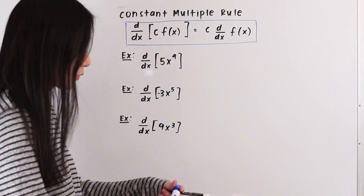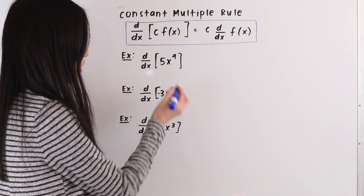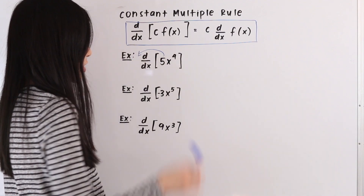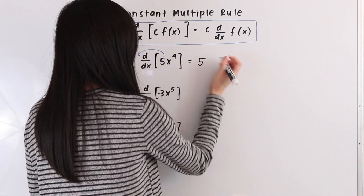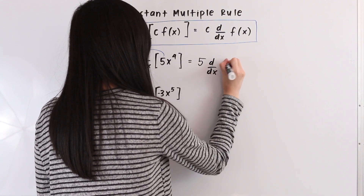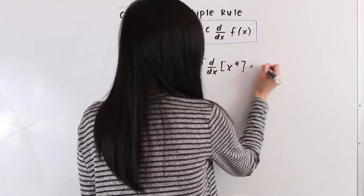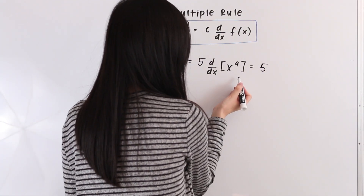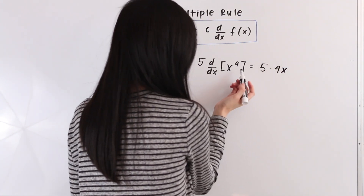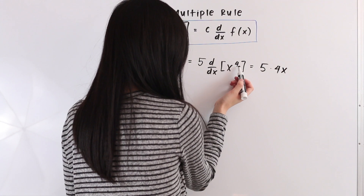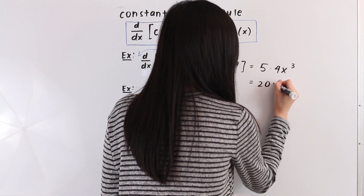In this first example we have the derivative with respect to x of 5x to the fourth power. As our first step, let's bring this constant outside of our derivative, giving us 5 times the derivative with respect to x of x to the fourth. We can use the power rule here — we bring down the exponent, giving us times 4x, and then subtract 1 from our exponent, leaving us with 4x cubed. So the result is 5 times 4x cubed, which is 20x cubed.